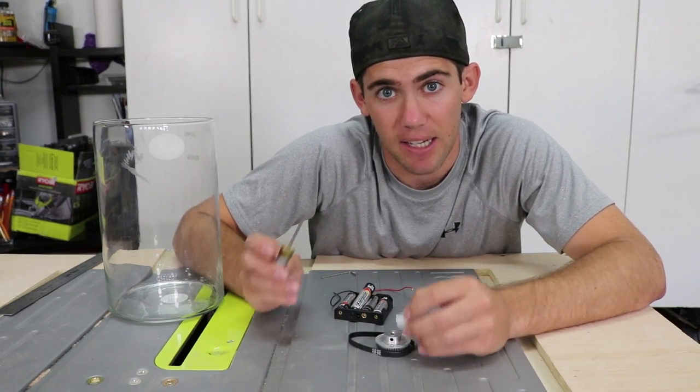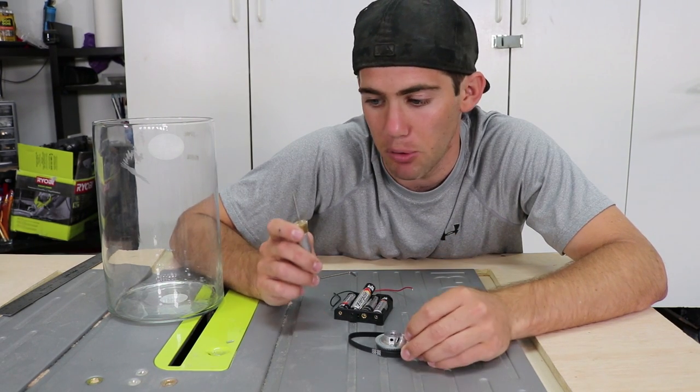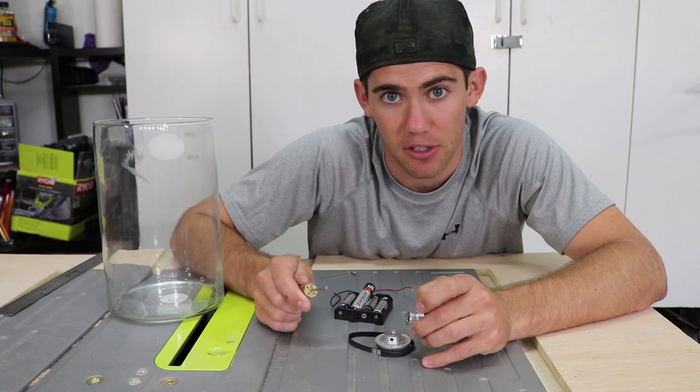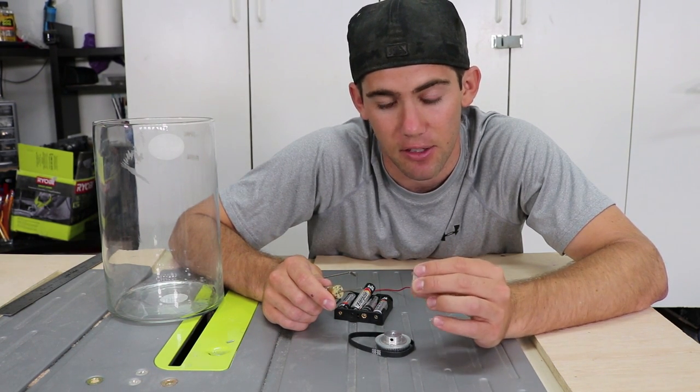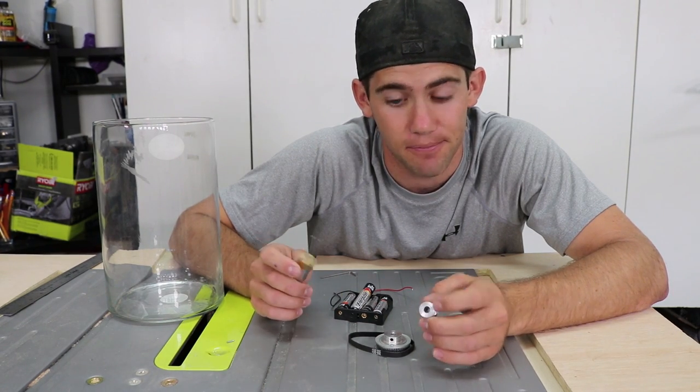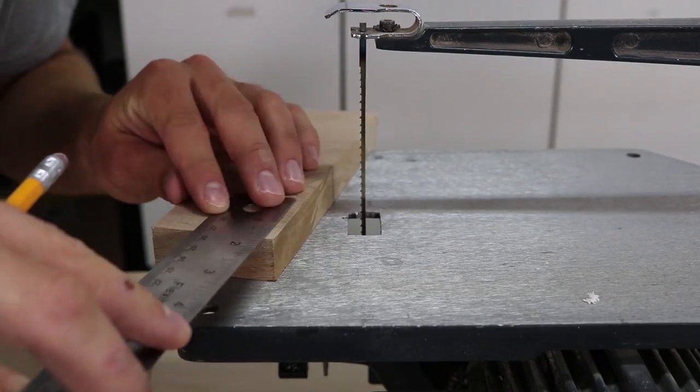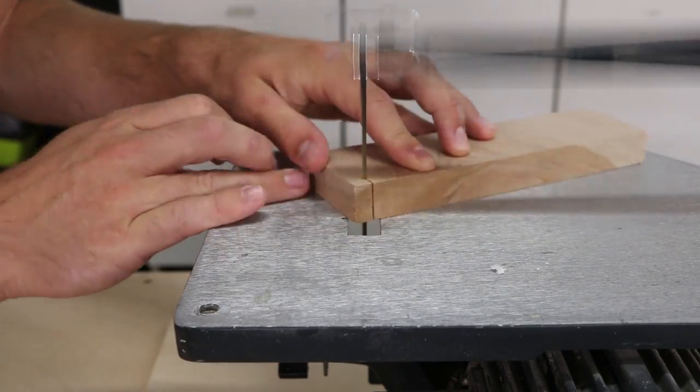Now the first thing I have to do is make an adapter for the motor to fit into the first pulley. Because the motor has a 3mm diameter shaft and the hole for this is 6mm. Since I don't have a sleeve, I'll have to make my own. So that's what I'm gonna do first. At first I tried making a sleeve out of wood, but that didn't work out. So I switched to a different method.